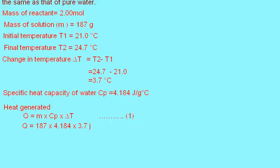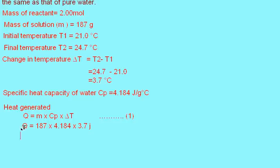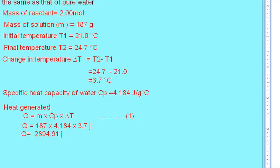Plugging in the values, Q equals 157 times 4.184 times 3.7. After calculating, the resultant unit is joules. After calculation, Q is equal to 2.899 kilojoules.